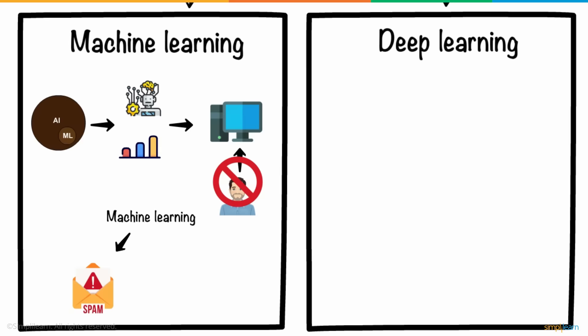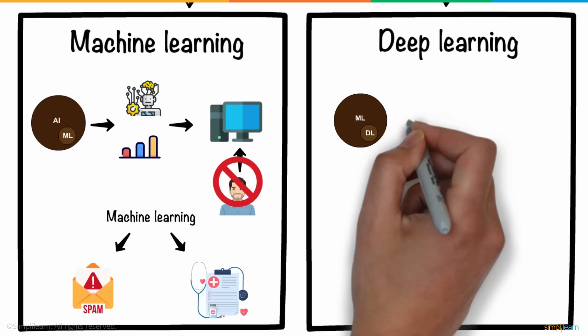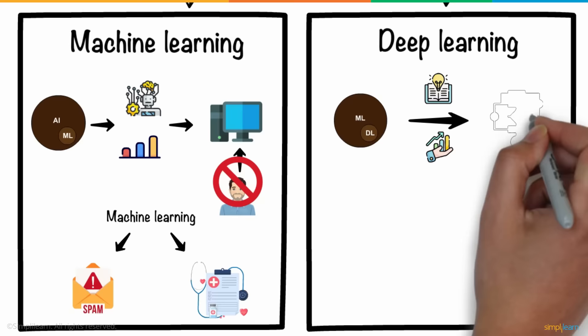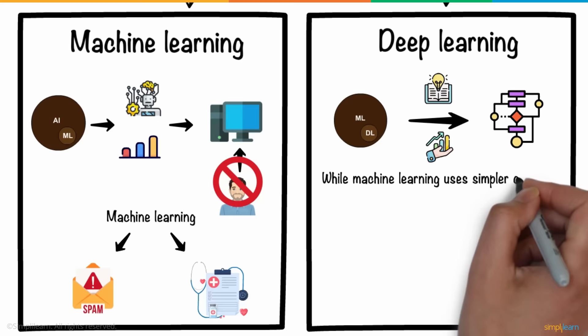Deep learning can be considered a subset of machine learning. It is a field that is based on learning and improving on its own by examining computer algorithms. While machine learning uses simpler concepts, deep learning works with artificial neural networks, which are designed to imitate the human brain.